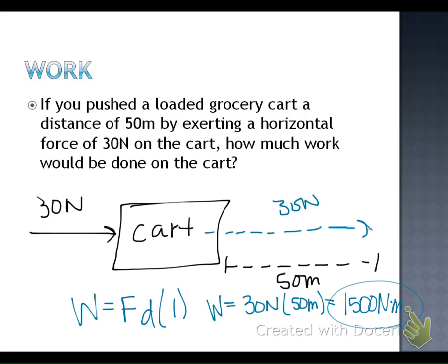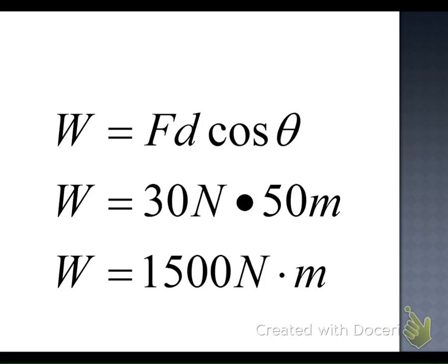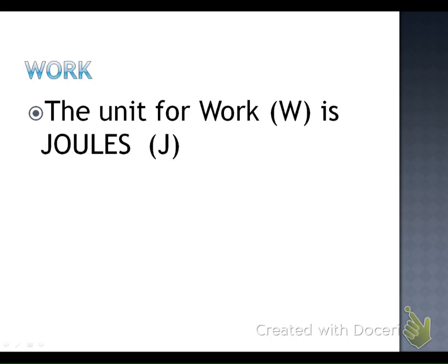1,500 newton meters — we're going to learn a new unit for that. Can we think of one other thing with units in newton meters? Torque, because we take F times R times sine of theta, force times radius. A unit for work is what we call a joule, indicated by a capital J. Work is written as capital W. One joule is equal to one newton meter.